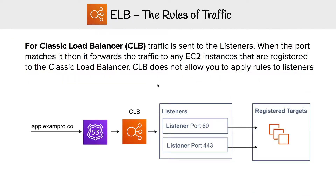Let's talk about classic load balancer. Classic load balancer is much simpler. You have traffic coming in, it goes to CLB, you have your listeners that listen on those ports, and you have registered targets. So there aren't target groups; you just have EC2 instances that are associated with the classic load balancer.